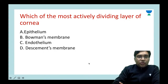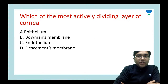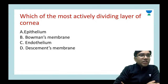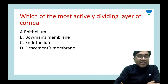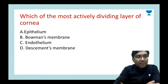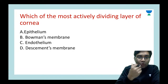The next question, which was an All India PG question: which of the following is the most actively dividing layer of the cornea? Options are epithelium, Bowman's membrane, endothelium, or Descemet's membrane. Try to answer.